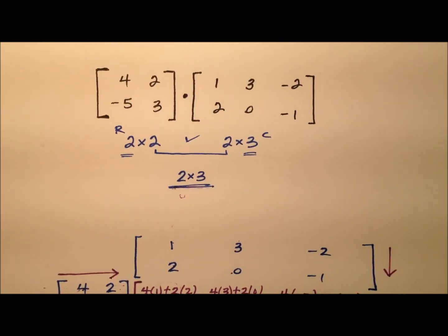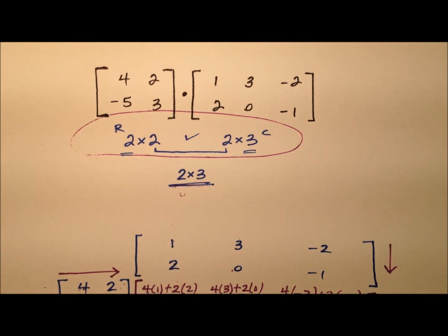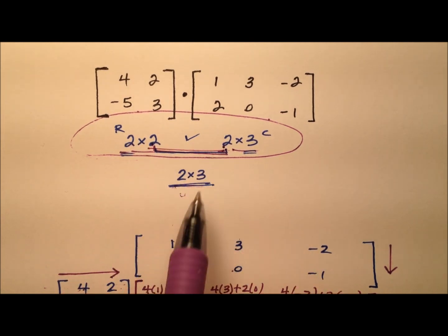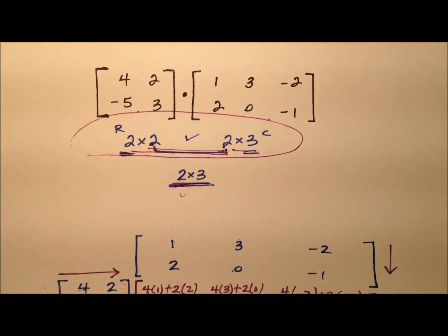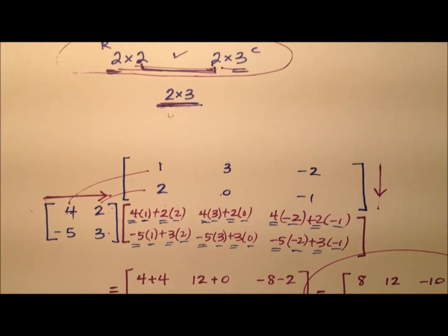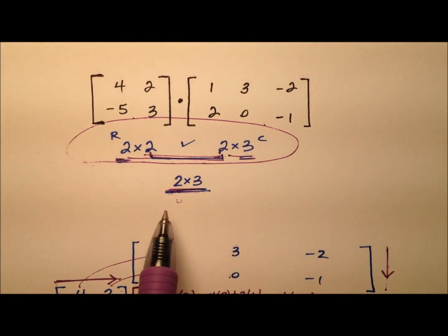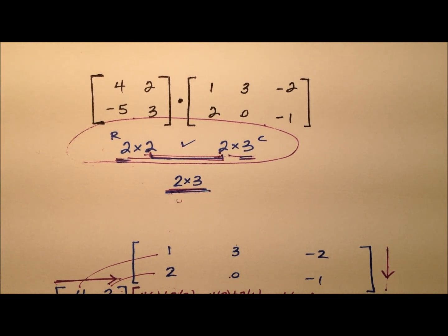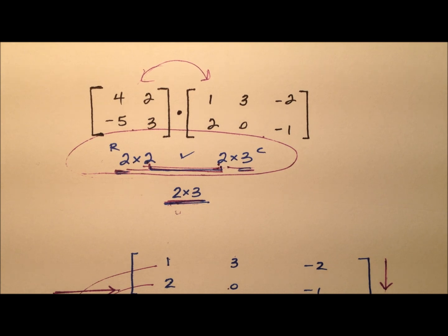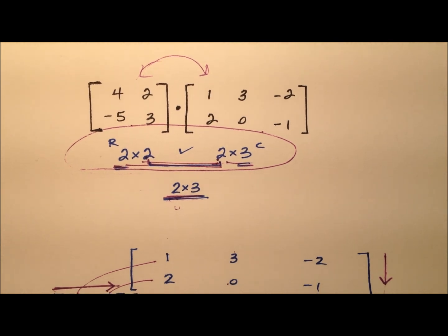As a quick recap: whenever you do matrix multiplication, first ensure the multiplication is defined by checking that the number of columns in the first matrix equals the number of rows in the second — those middle values must match. The dimensions of the product matrix are the leftover outer dimensions. Then set it up, come across the rows, down the columns, multiplying and adding. One final note: the commutative property does not hold for matrix multiplication. If you were to flip these two matrices and try the multiplication, it would actually be undefined. In another video, I'll talk more about all the properties for matrix multiplication.